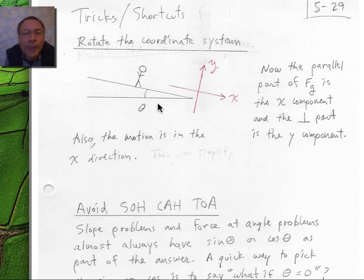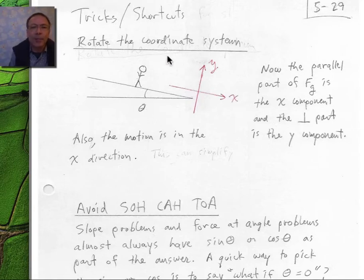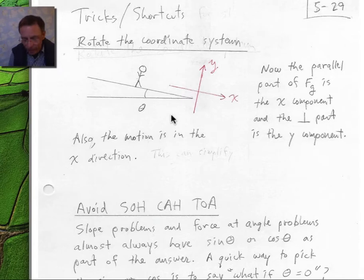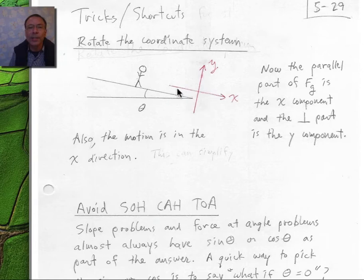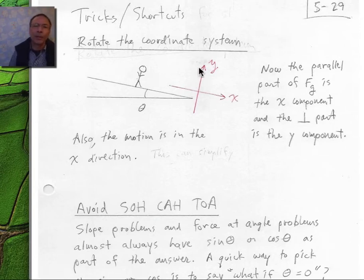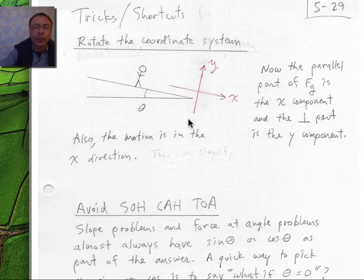The book recommends that in this type of problem, instead of keeping the standard coordinate system with Y straight up and X horizontal, it's easier to tilt the coordinate system so that the X axis is parallel to the hill and the Y axis is normal to the hill. If you look at the book examples on pages 133–134, you'll see this approach used.